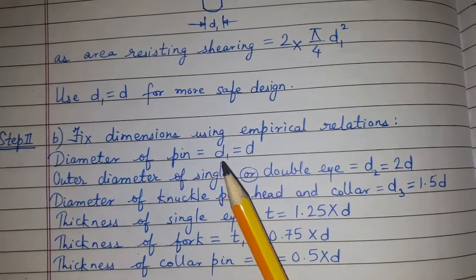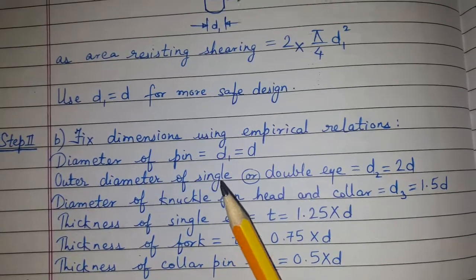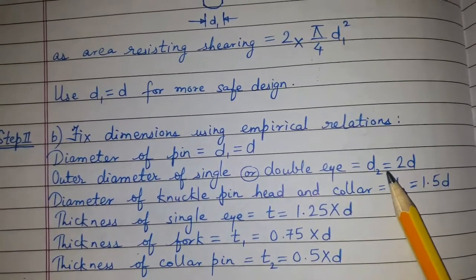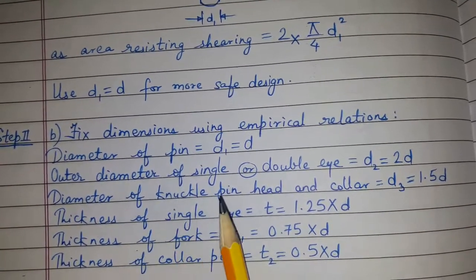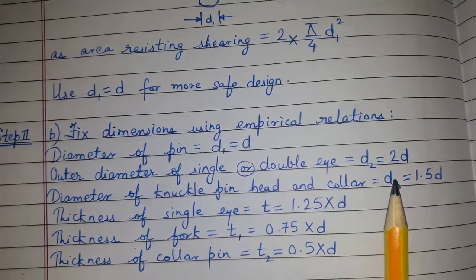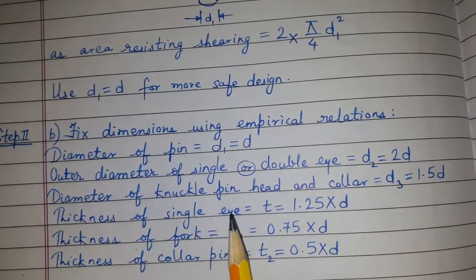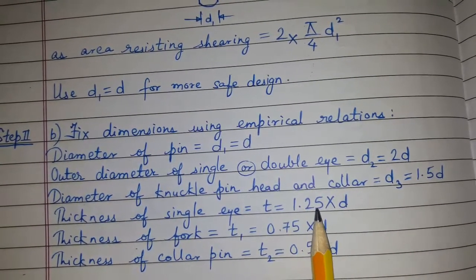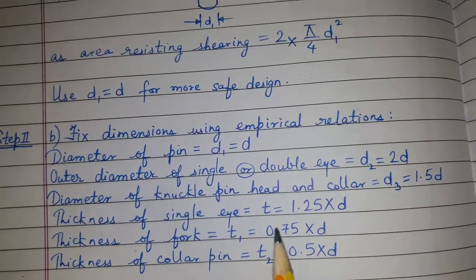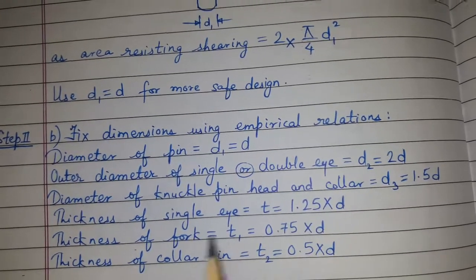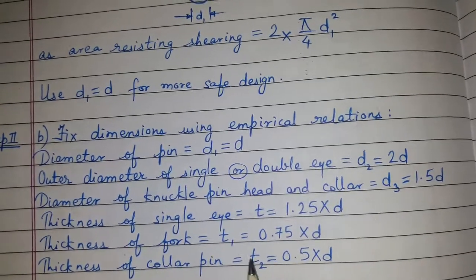Diameter of the pin d1 is equal to d. Outer diameter of single or double eye, d2, is equal to 2d. Diameter of knuckle pin head and collar, d3, is equal to 1.5d. Thickness of single eye, t, is equal to 1.25d. Thickness of fork, t1, is equal to 0.75d. Thickness of collar pin, t2, is equal to 0.5d.